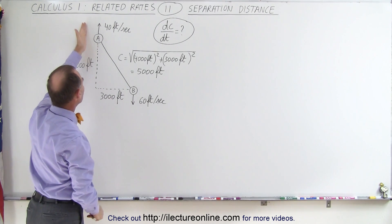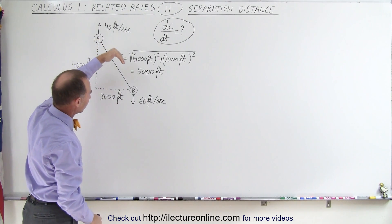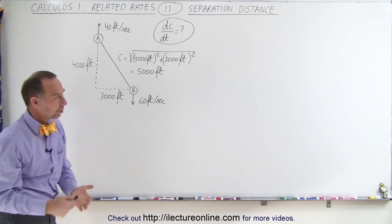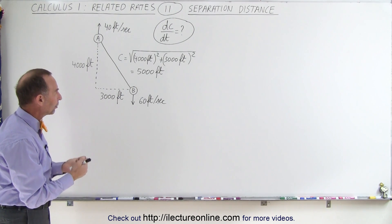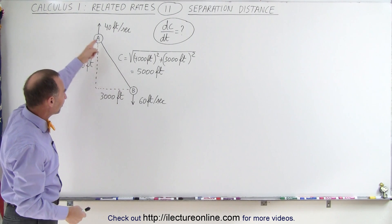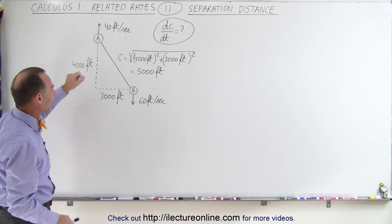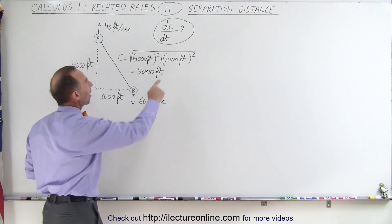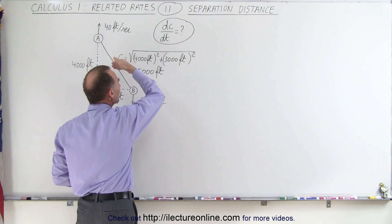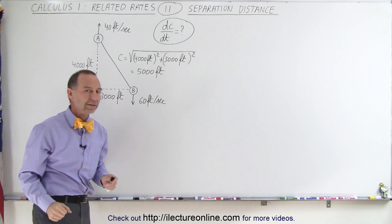Car A is driving 40 feet per second in the northerly direction. Car B is driving 60 feet per second in the southerly direction. And at the moment that they're 5,000 feet apart, because we can calculate the 5,000 feet using Pythagorean theorem, we want to figure out how fast the distance between them is changing at that very moment in time.